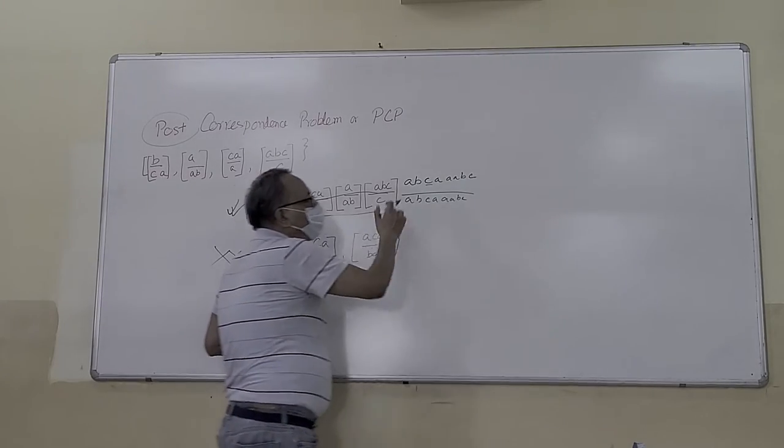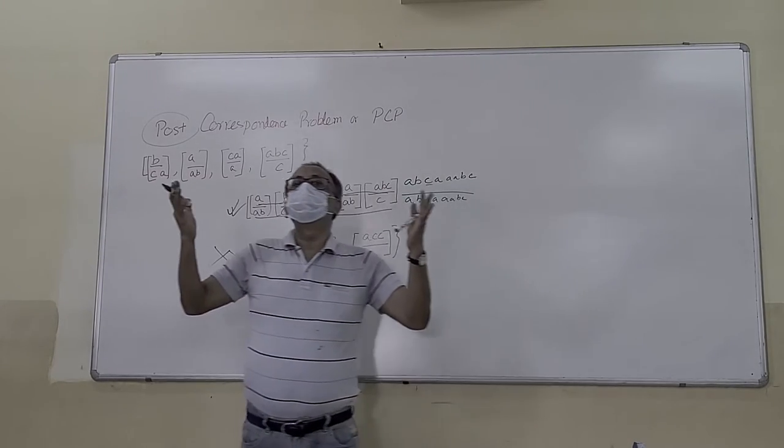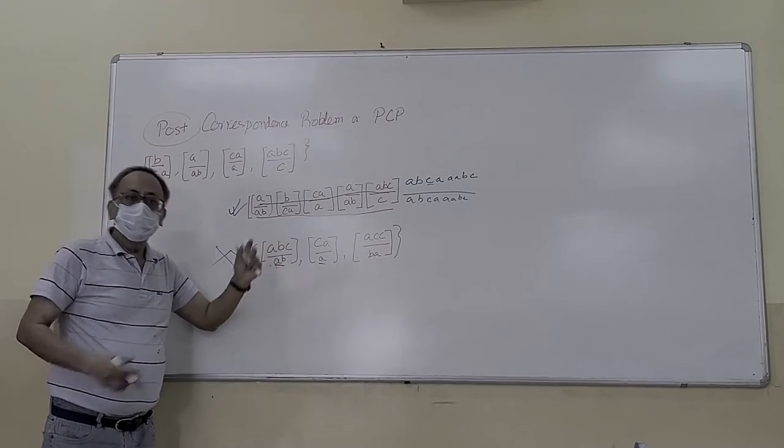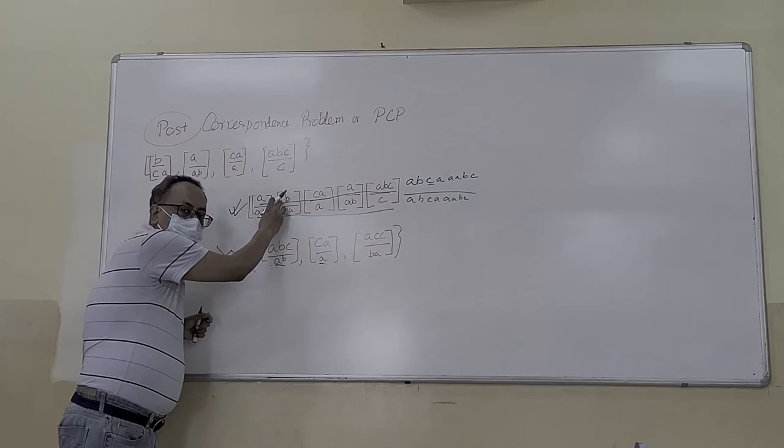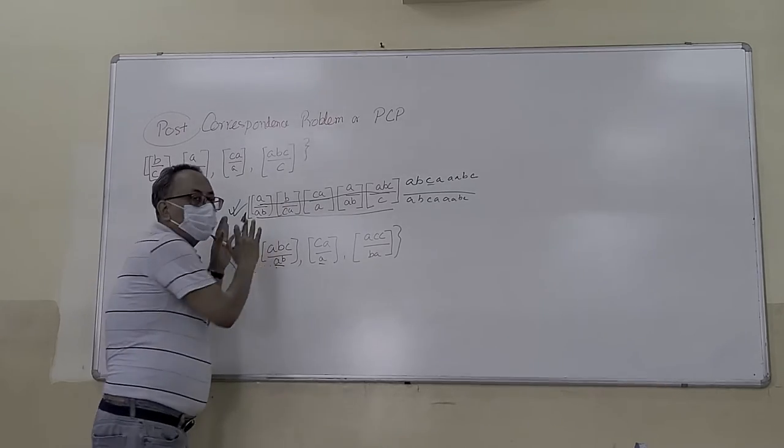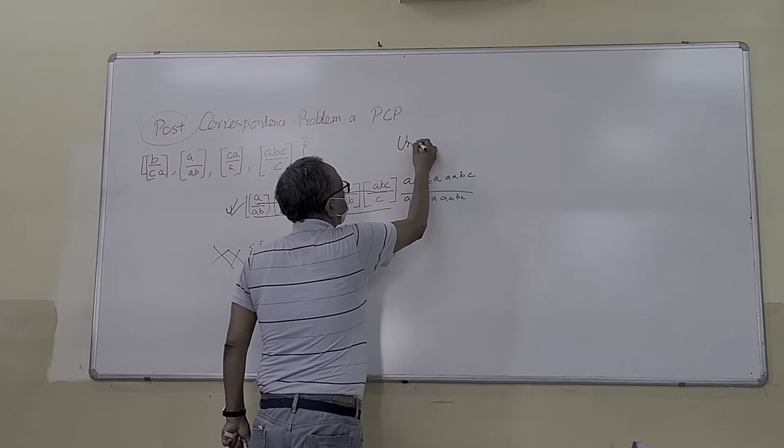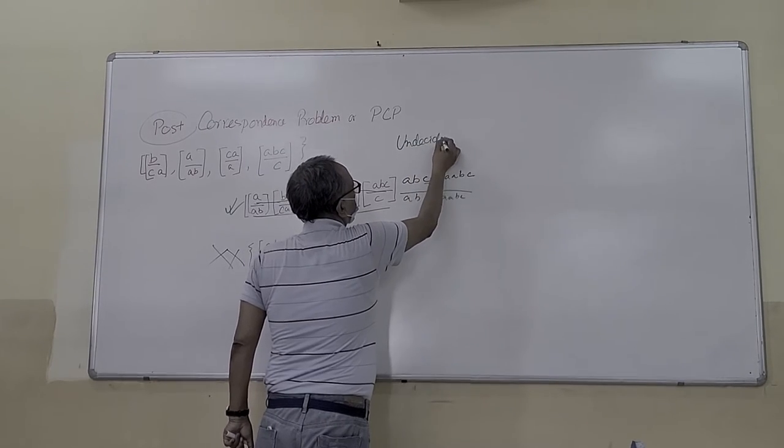Right now, for dices like these, there is no algorithm. You have to repeat and check. So this is a problem where there is no algorithm. This is an undecidable problem, one of the undecidable problems.